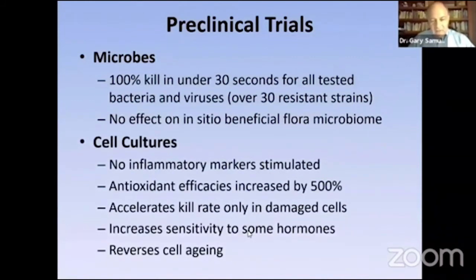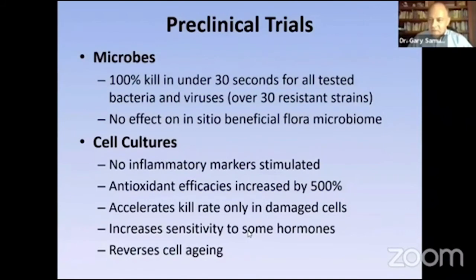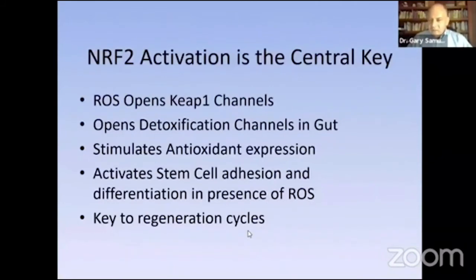In cell cultures, we found that it increased antioxidant efficacies by incredible amounts. It increased sensitivity to hormones — another finding confirmed in the gene study. It reverses cell aging — cells that were aging and unresponsive all of a sudden became responsive and renewed when exposed to it in cell cultures. It opens key ion channels, which are also part of the genetic pathways we've studied. It opens detoxification channels in the gut and stimulates antioxidant production, and it's key to regeneration cycles of the cell.